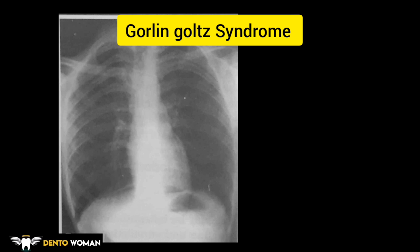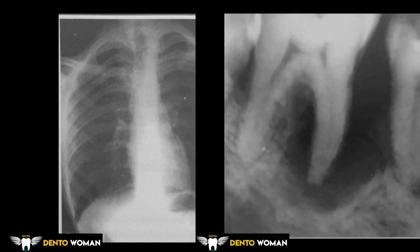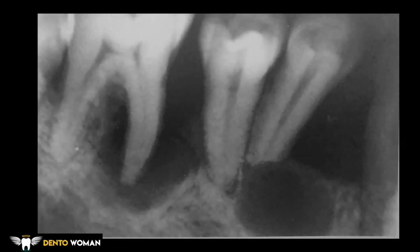Gorlin-Goltz syndrome is an inherited abnormality which includes multiple nevoid basal cell carcinoma of the skin, skeletal, central nervous system, and eye abnormalities, and multiple jaw cysts which are usually odontogenic keratocysts.